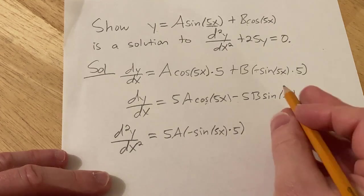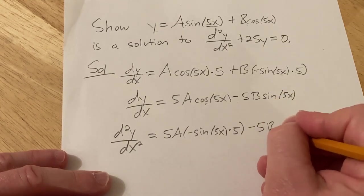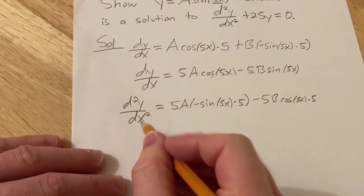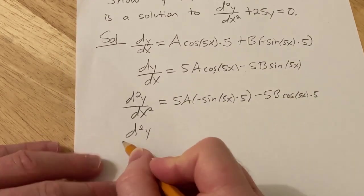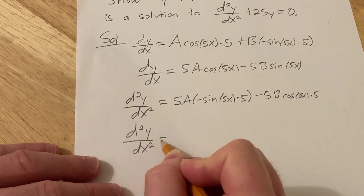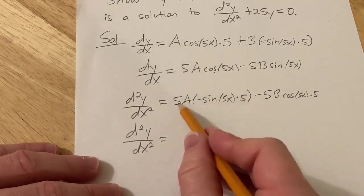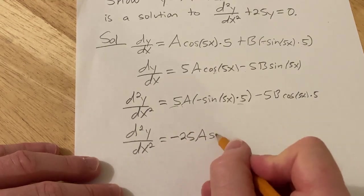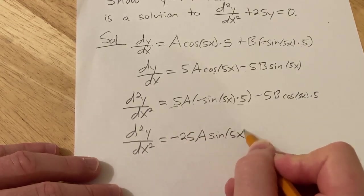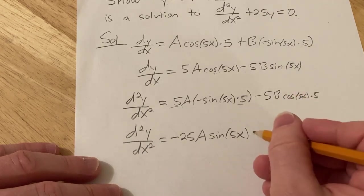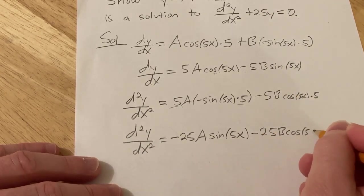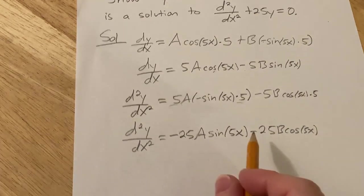Here the derivative of sine is cosine, so same thing, minus 5B, cosine 5x, times 5. So cleaning this up, we get the second derivative with respect to x is equal to negative 25, because we have 5 times 5. So negative 25A sine 5x. And this will be minus 25B cosine 5x. All right, so that's the second derivative.